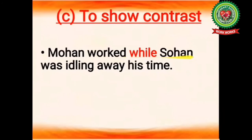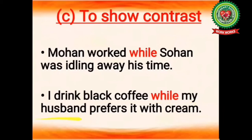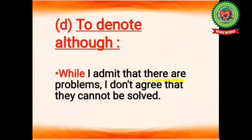While is also used as a conjunction to show contrast. Example: Mohan worked while Sohan was idling away his time — meaning Mohan worked but Sohan was wasting his time. Another example: I drink black coffee while my husband prefers it with cream — both ideas are opposite, meaning I drink black coffee but my husband prefers it with cream. While is also used in the sense of 'although': while I admit that there are problems, I don't agree that they cannot be solved — meaning I agree there are problems yet I disagree they cannot be solved.